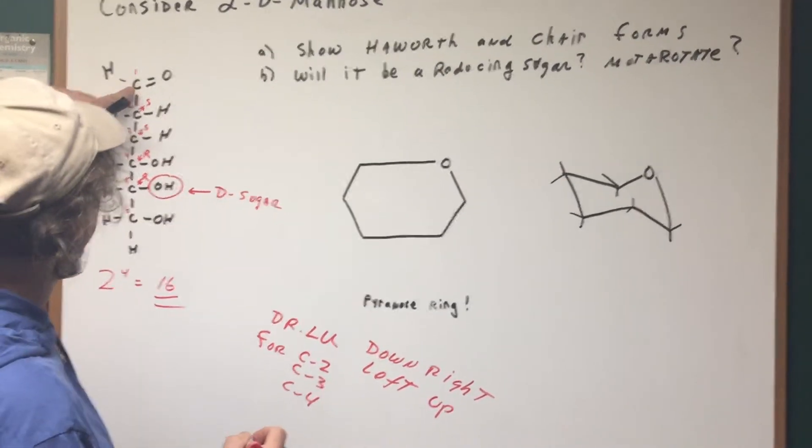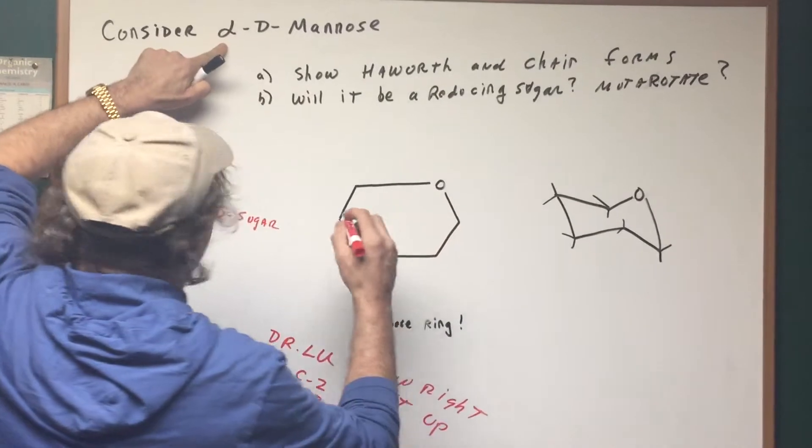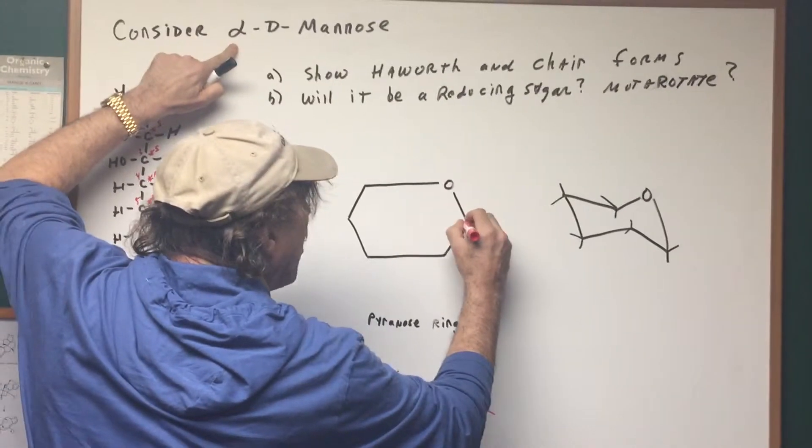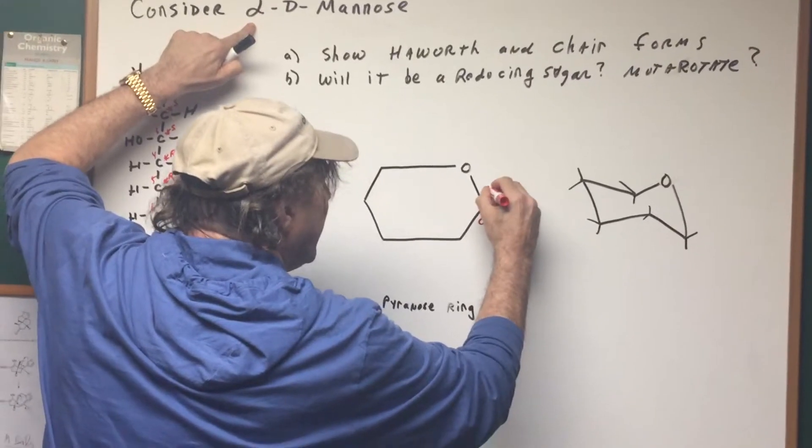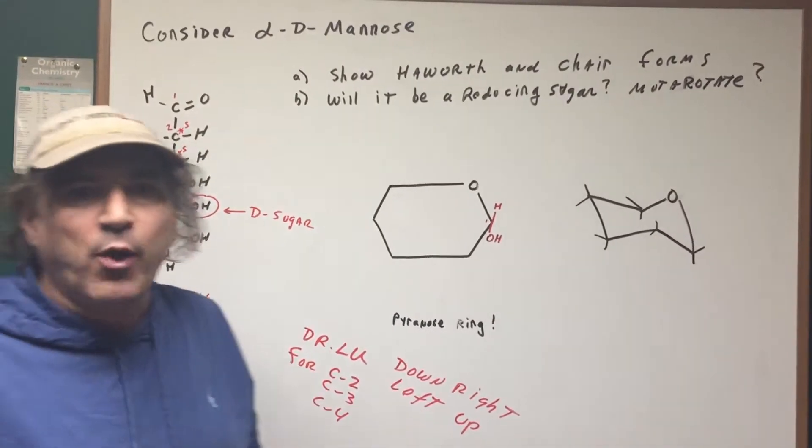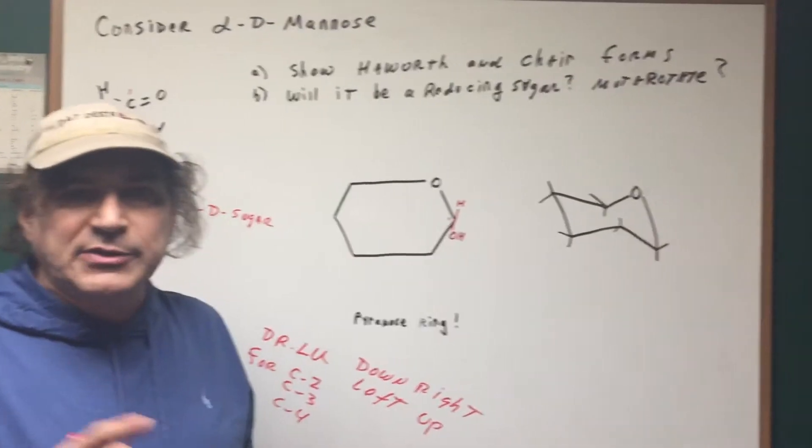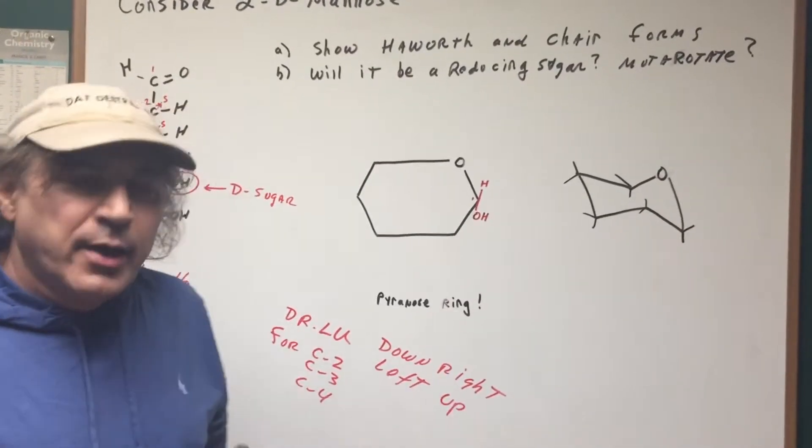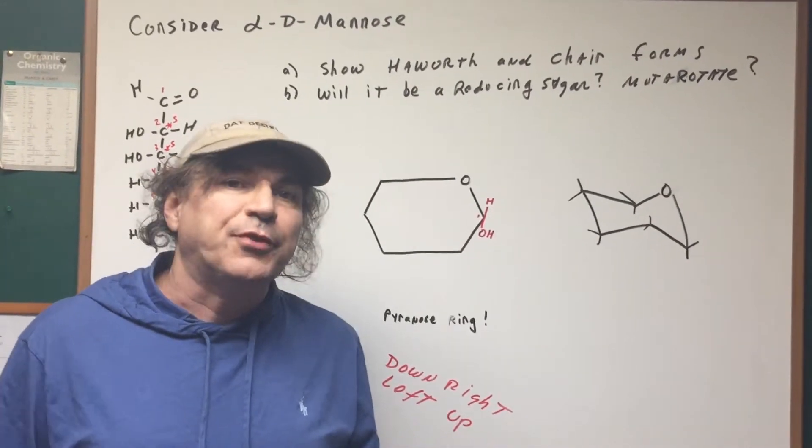So what we're going to do is, let's look here, it says alpha. Because they want alpha, that means you go to position one, which is right here, and the OH is pointing in the down position. If it was pointing upwards, that would be beta. So carbon number one tells you if it's alpha or beta. And remember, alpha and beta are called anomers. Short fact question for the DAT.